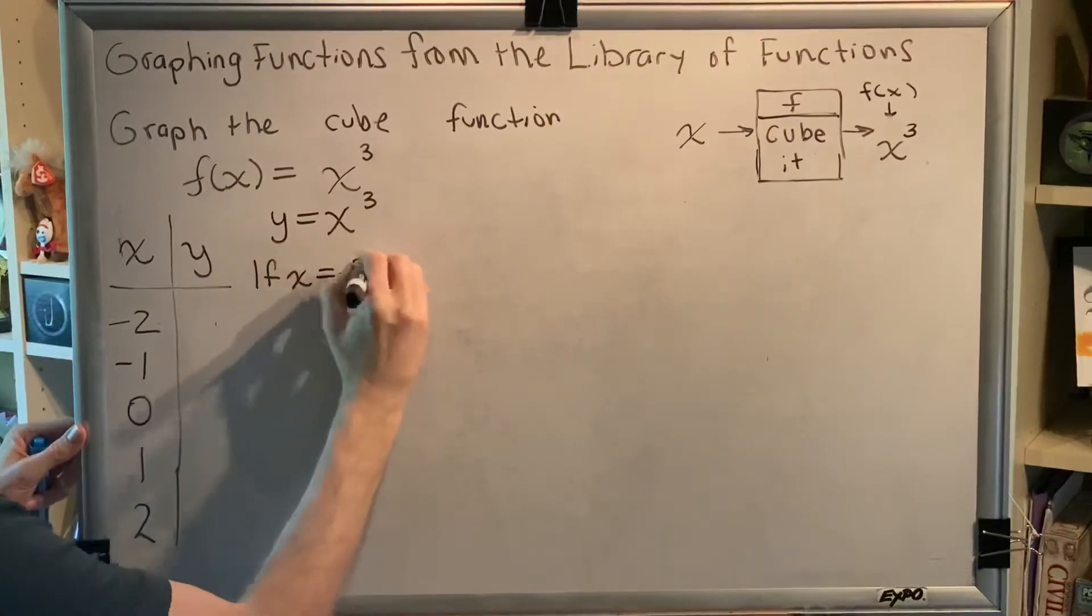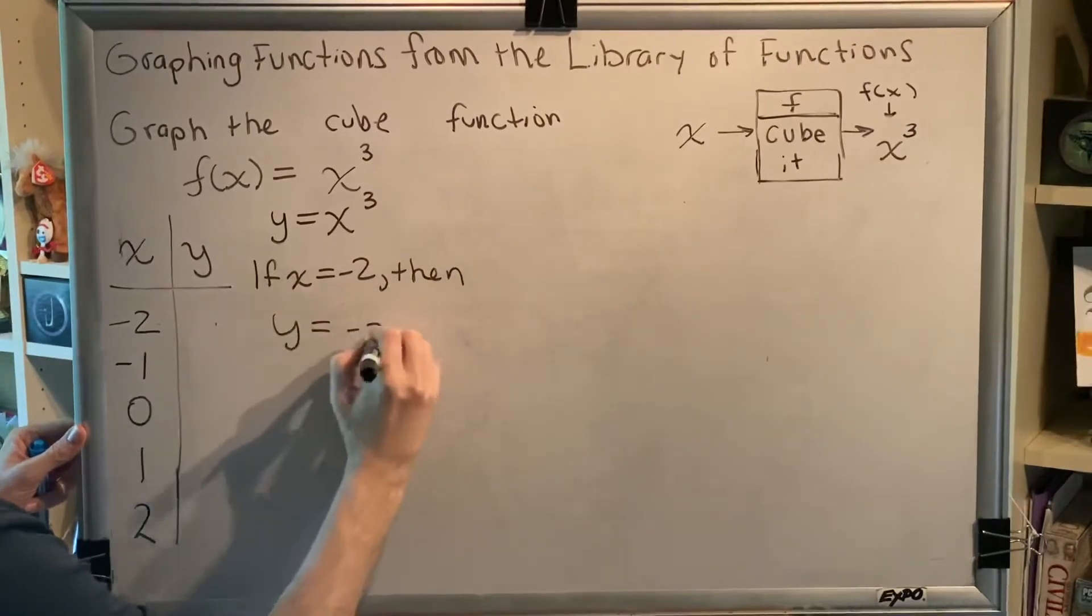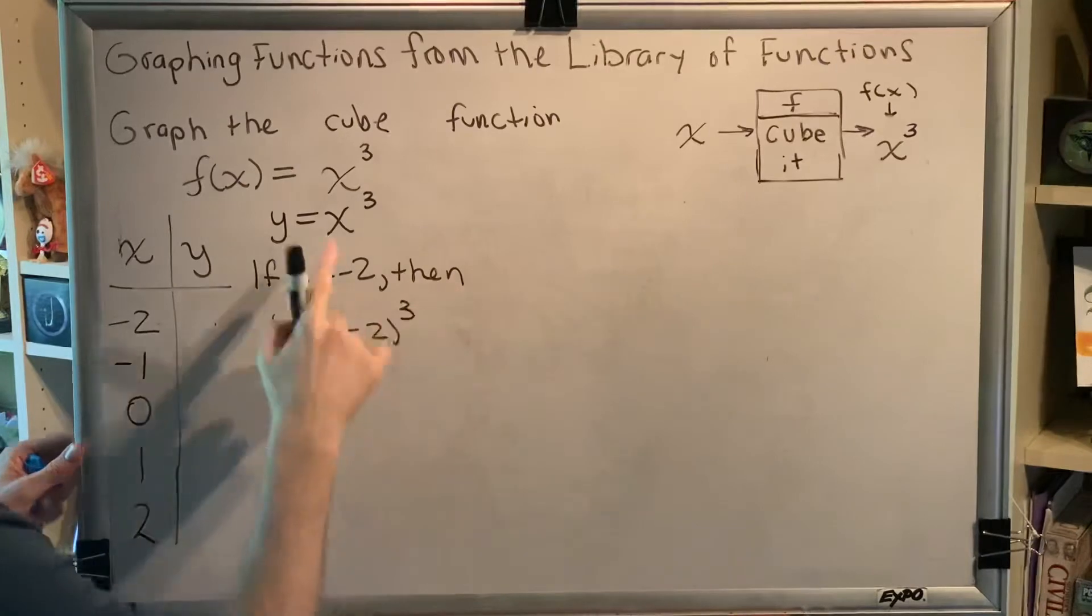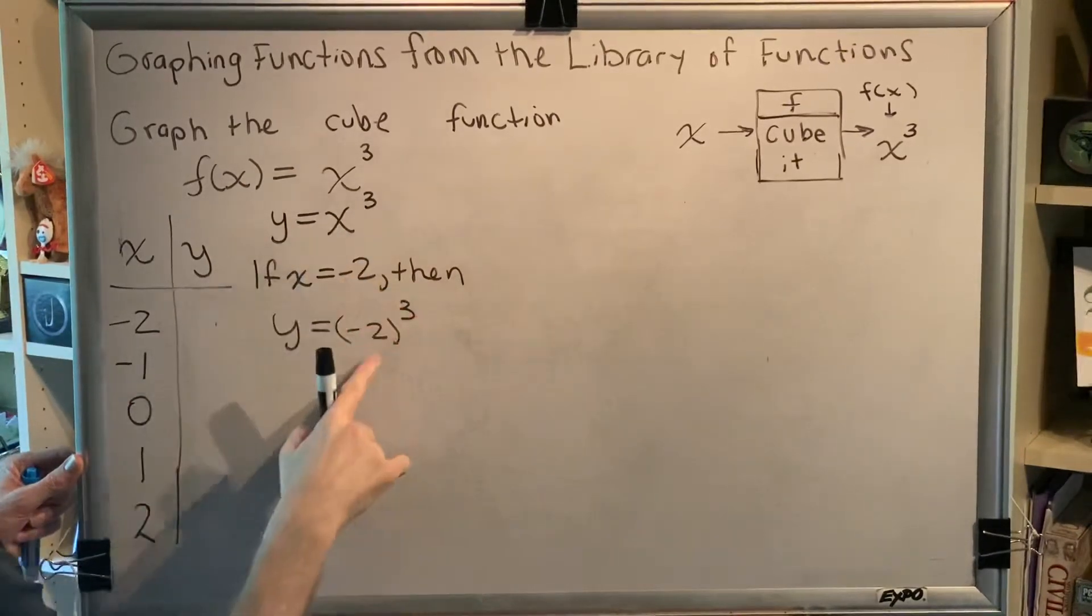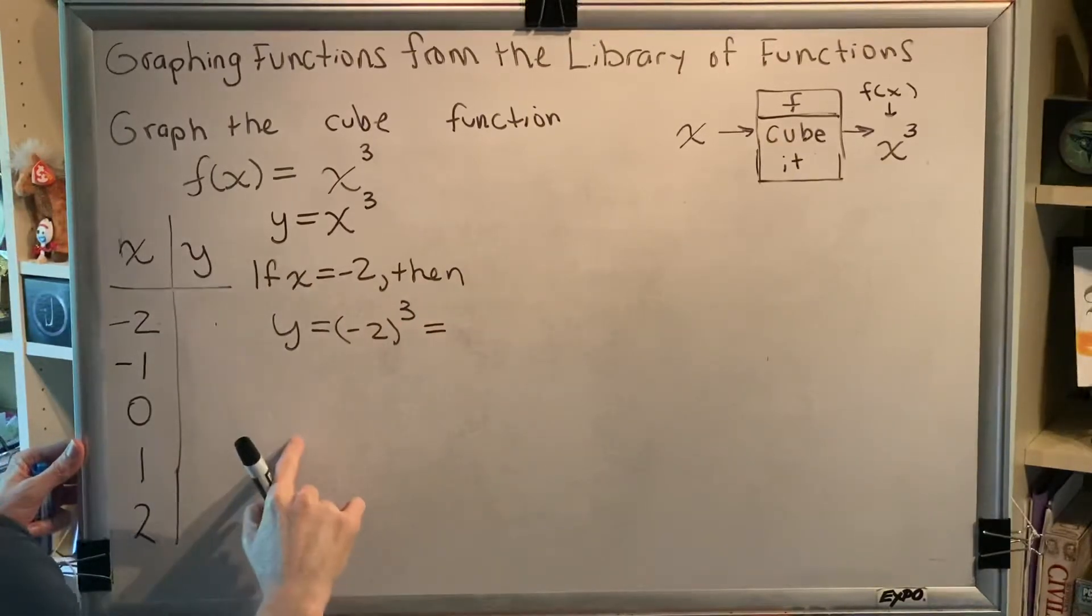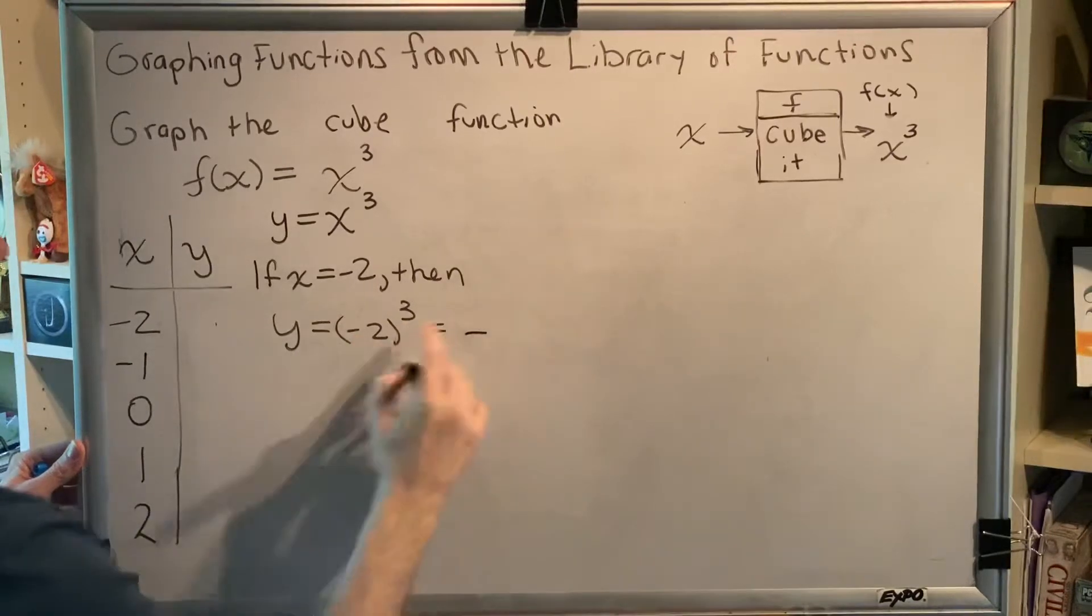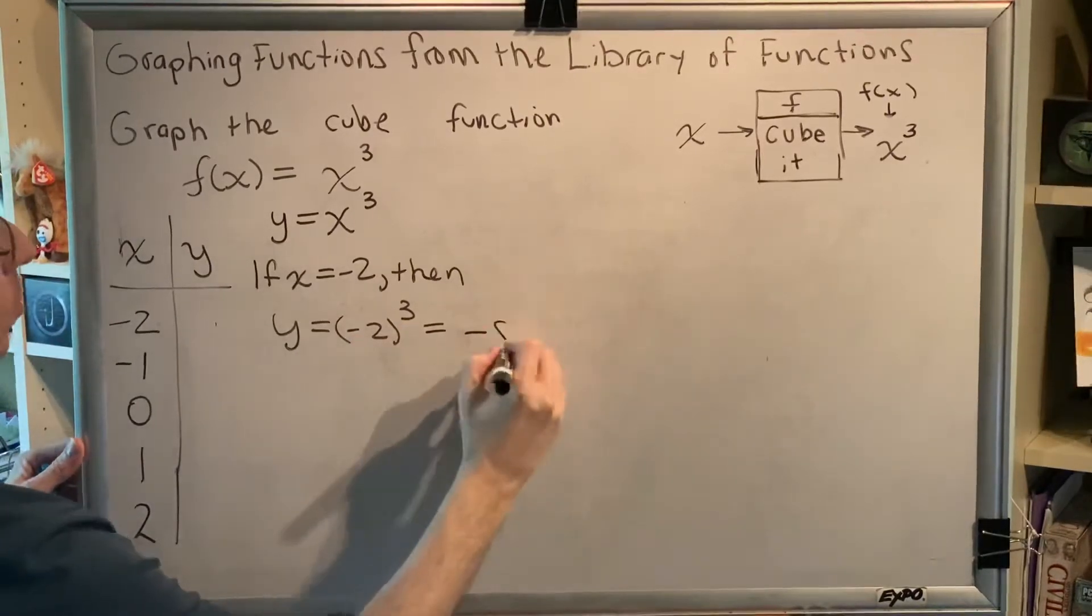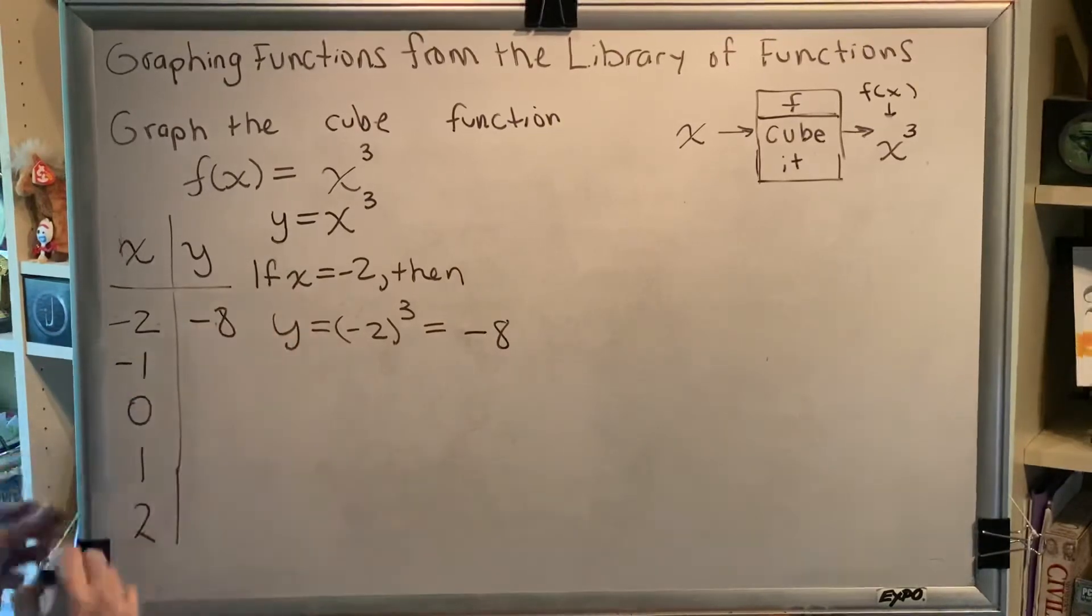If x equals negative 2, then y equals negative 2 cubed. Notice x is being replaced by something new, and because it has an exponent, parentheses are necessary. So, negative 2 cubed. Well, an odd number of negatives makes a negative, and 2 cubed is 8. 2 times 2 is 4 times 2 is 8, so we get negative 8.